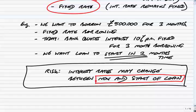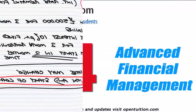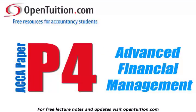Well, that was just the introduction. In the next lecture, we'll look at the two very easy ones: forward rate agreements and interest rate guarantees. Thank you.